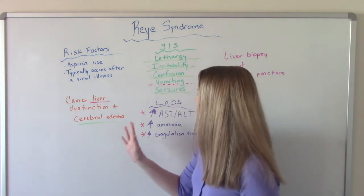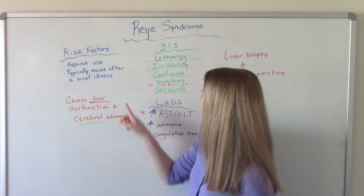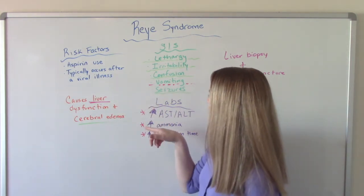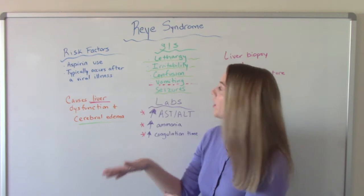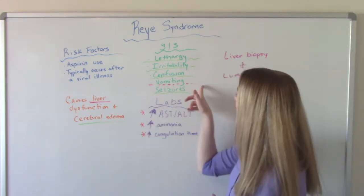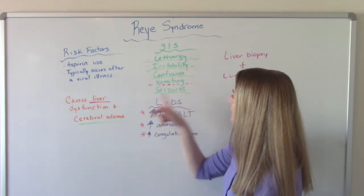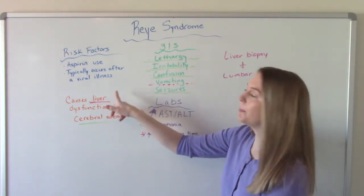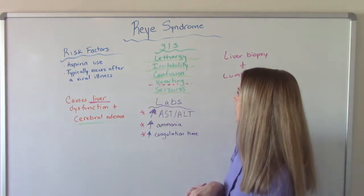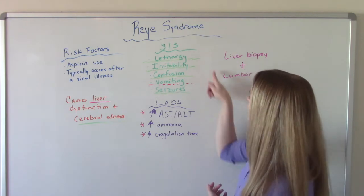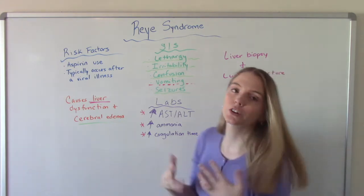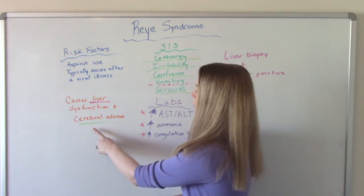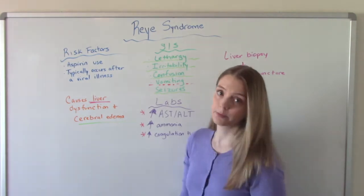You'll see I've underlined things in red and green to show what they're associated with. The vomiting happens because of the liver dysfunction, and all the other things — lethargy, irritability, confusion, seizures, loss of consciousness — are neurological symptoms that happen as a result of the cerebral edema.